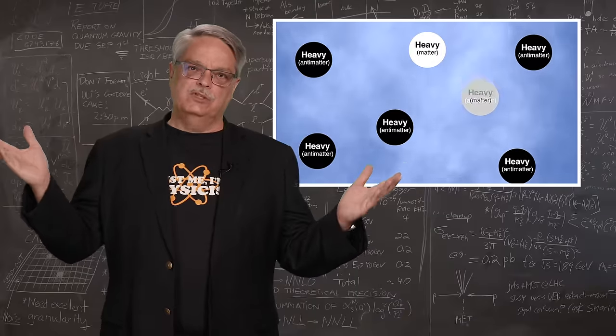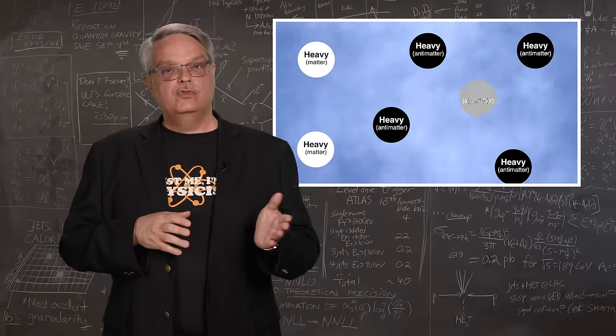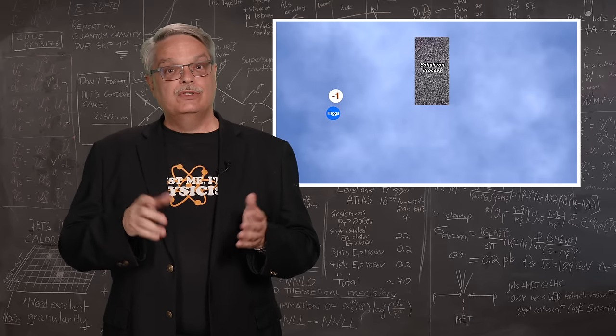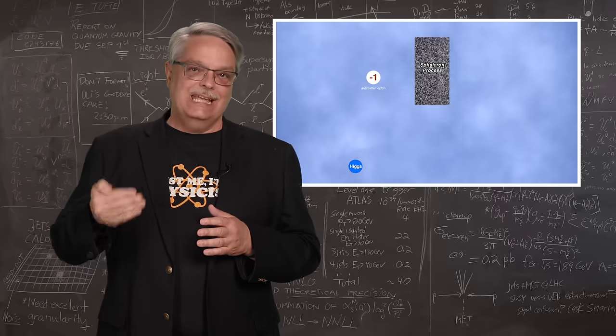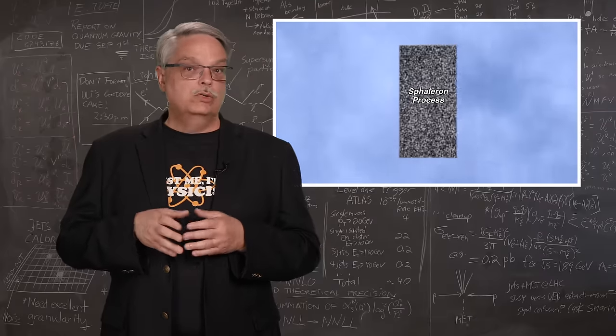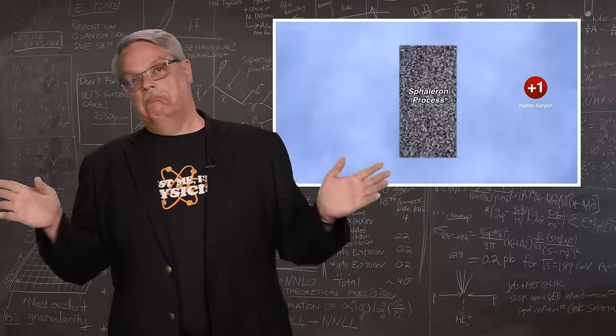So that's the big picture. At energies so high that mass doesn't exist, a heavy cousin of the neutrino is simultaneously matter and antimatter, and it prefers to decay into antimatter. Those decays result in antimatter leptons that are then converted into matter baryons, and then the universe cools down with more regular baryons than antimatter baryons. No problem.